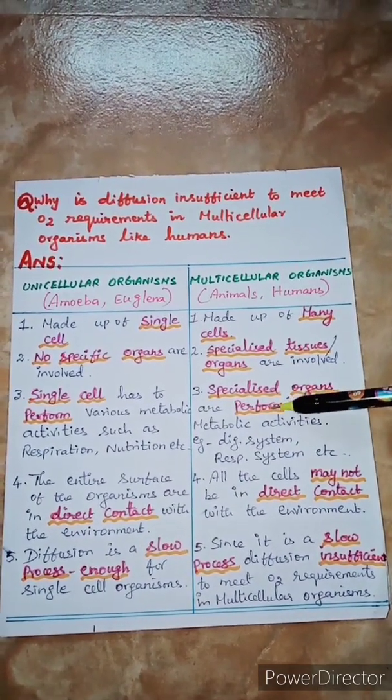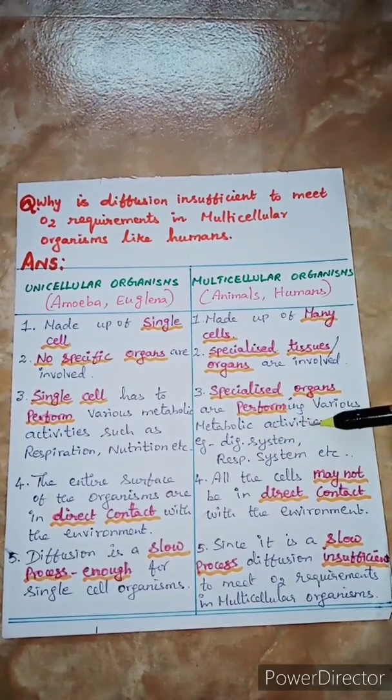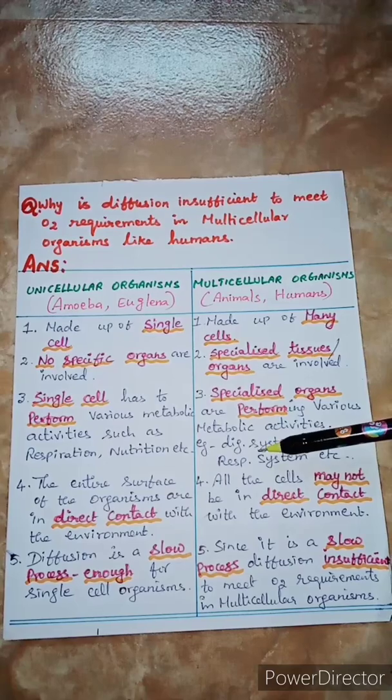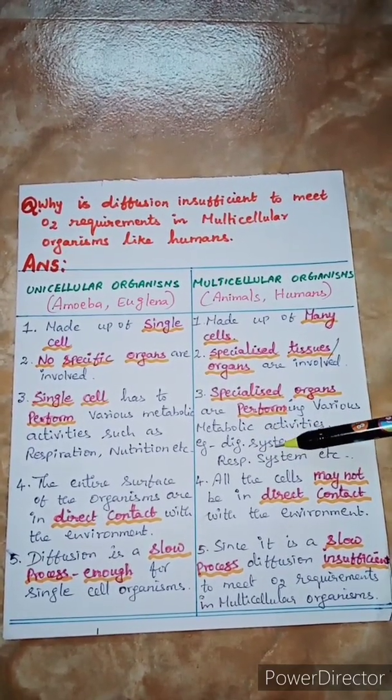And now, here in the multicellular organisms, the specialized organs or tissues are performing various metabolic activities and they form tissue systems called the digestive system, respiratory system, excretory system, etc.